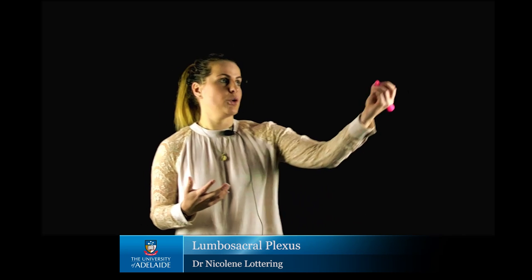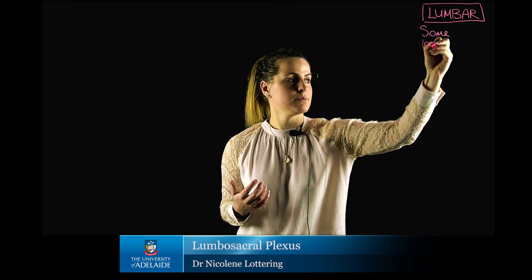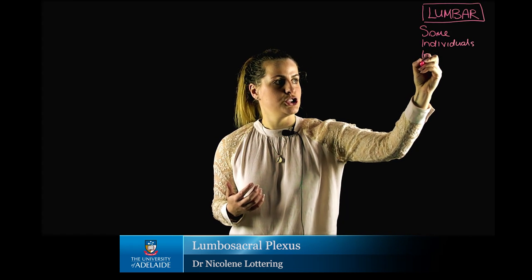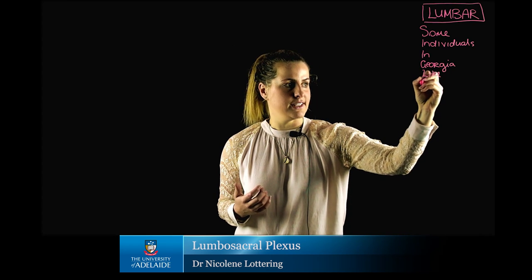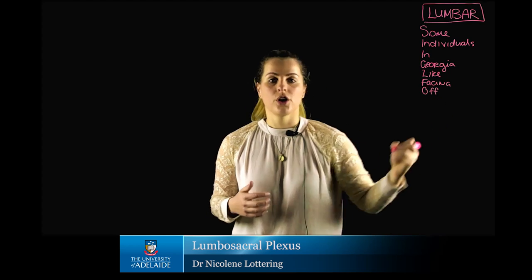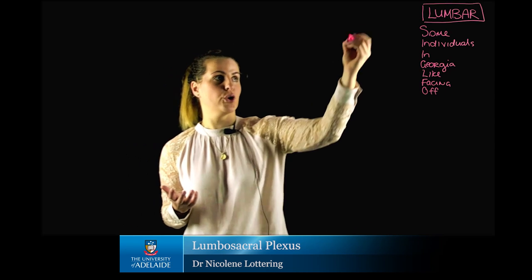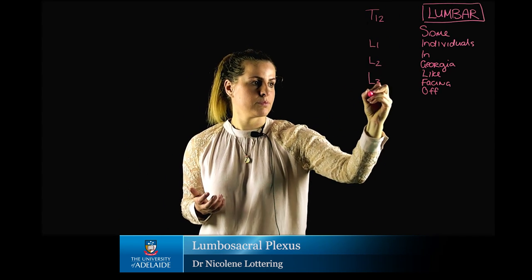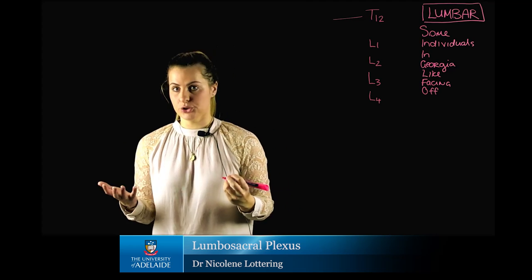A short way to remember this is to use the mnemonic for the lumbar plexus: 'some individuals in Georgia like facing off.' If we draw this out, we are going to draw vertebral levels from T12 to L4, and we are going to draw lines stemming out of each with both a ventral and a dorsal rami.